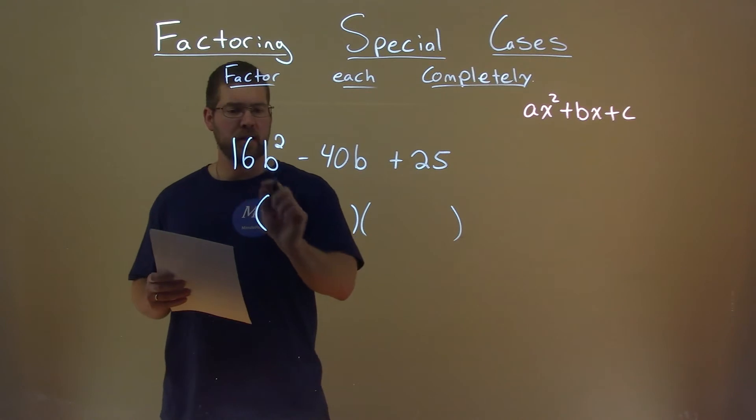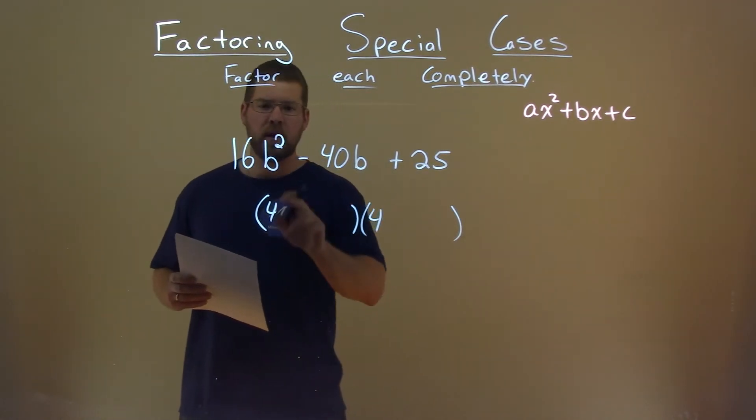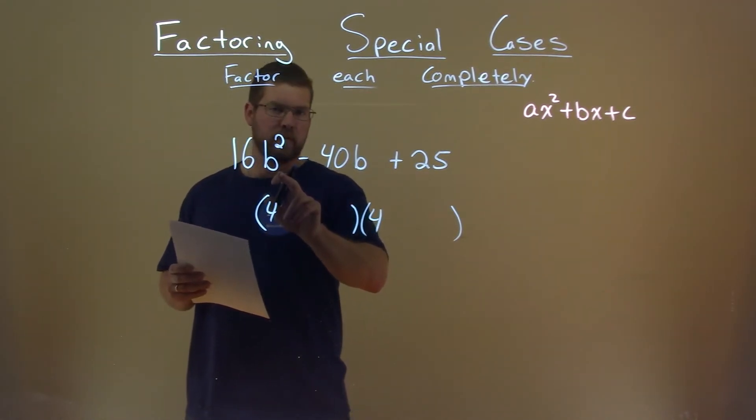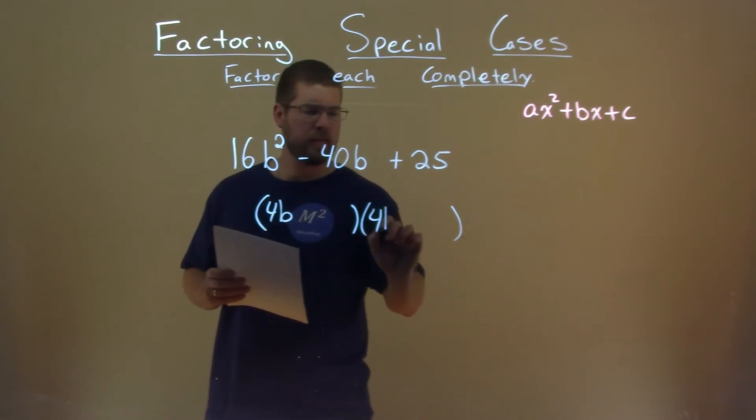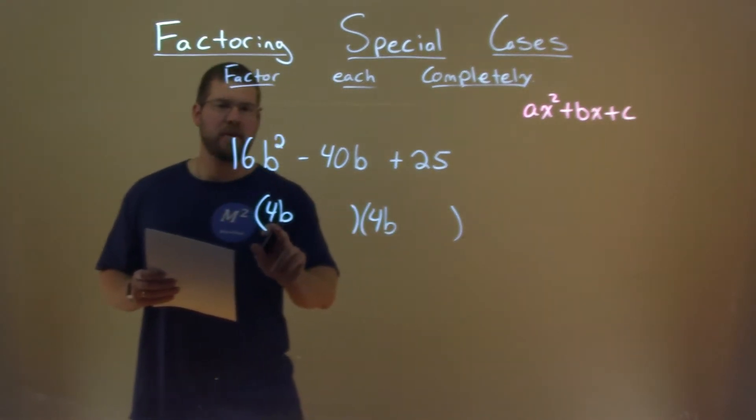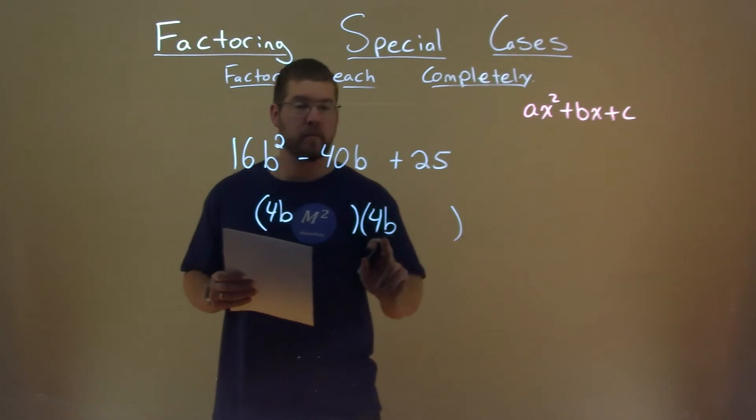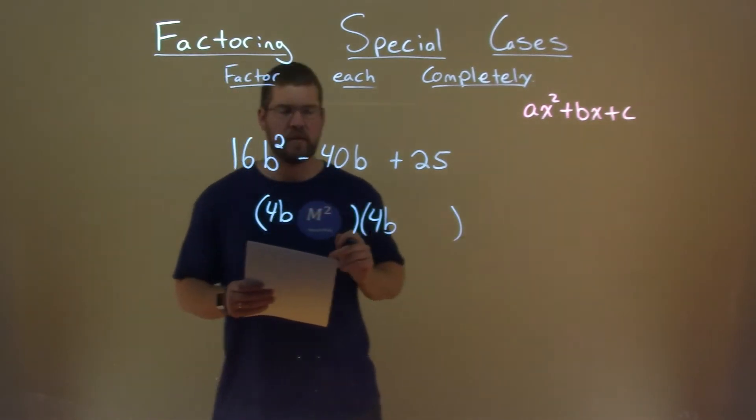Well, the square root of 16 is 4, so we put 4 here and 4 here. b squared, well, the square root of b squared is b, b, and b. So now we can see, when I multiply this out, 4b times 4b will give me that 16b squared.